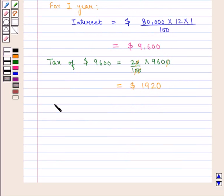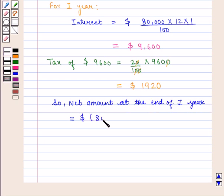So, the net amount at the end of first year will be equal to $80,000, which is the principal, plus $9,600, which is the interest, minus $1,920, which is the tax. This equals $87,680.